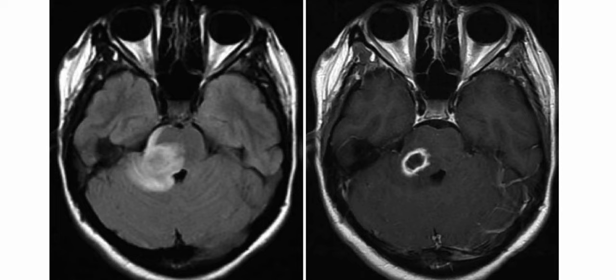Considering the key imaging finding of an enhancing pontine mass in a child, the top differential is of course brainstem glioma. However, the diagnosis in this case is rhombencephalitis with abscess. Other differentials include brainstem glioma and demyelinating disease such as ADEM.